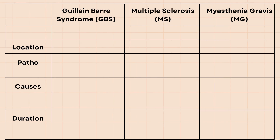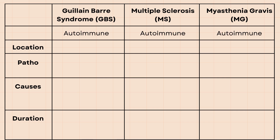Today we will go over the differences between Guillain-Barré syndrome, or GBS, multiple sclerosis, and myasthenia gravis for your nursing exams. For more details on each of these conditions, please watch my videos by clicking on the links in the description. GBS, multiple sclerosis, and myasthenia gravis are all autoimmune disorders that result in neurological symptoms.